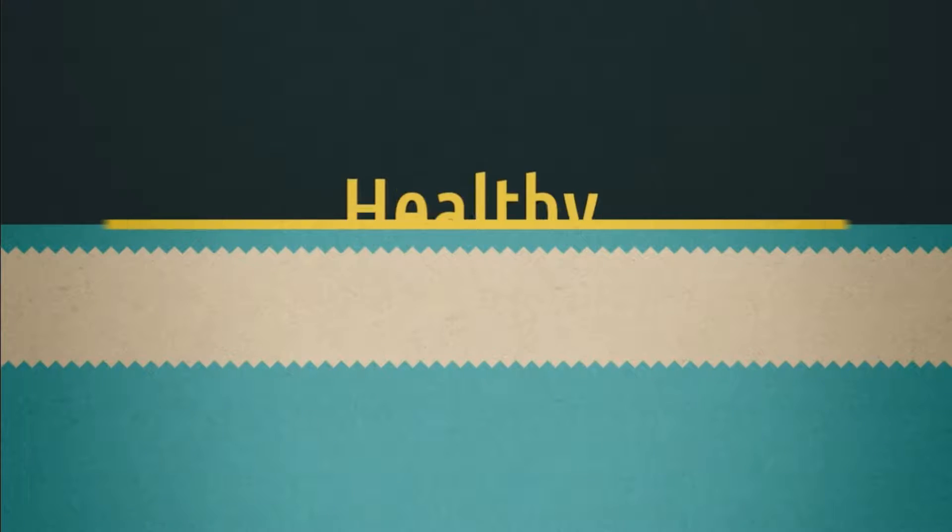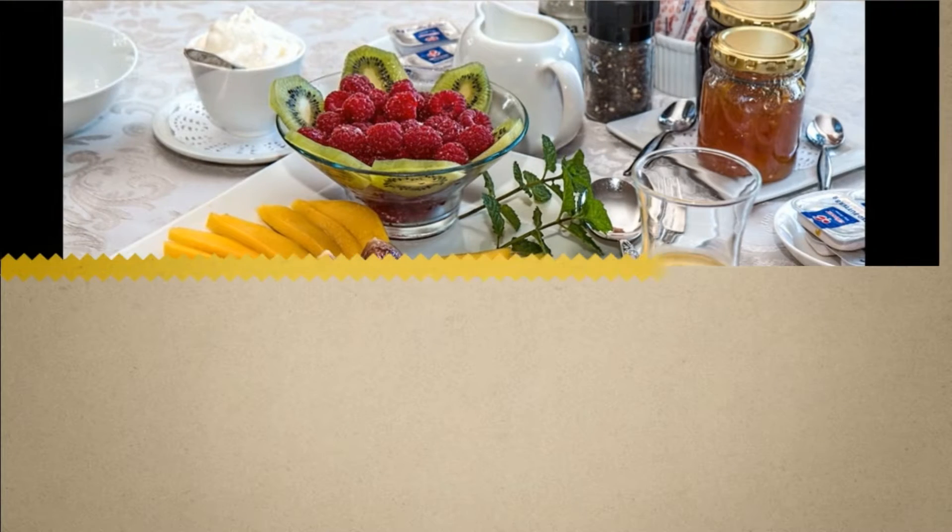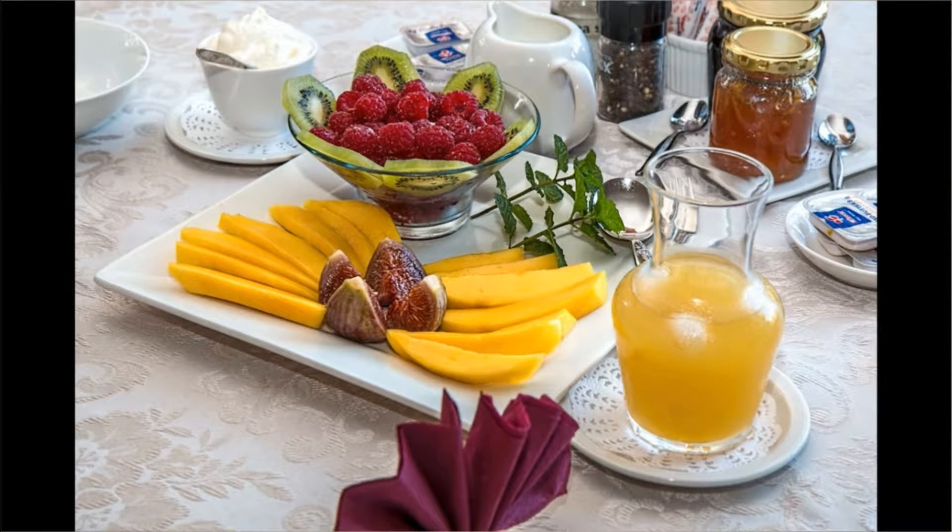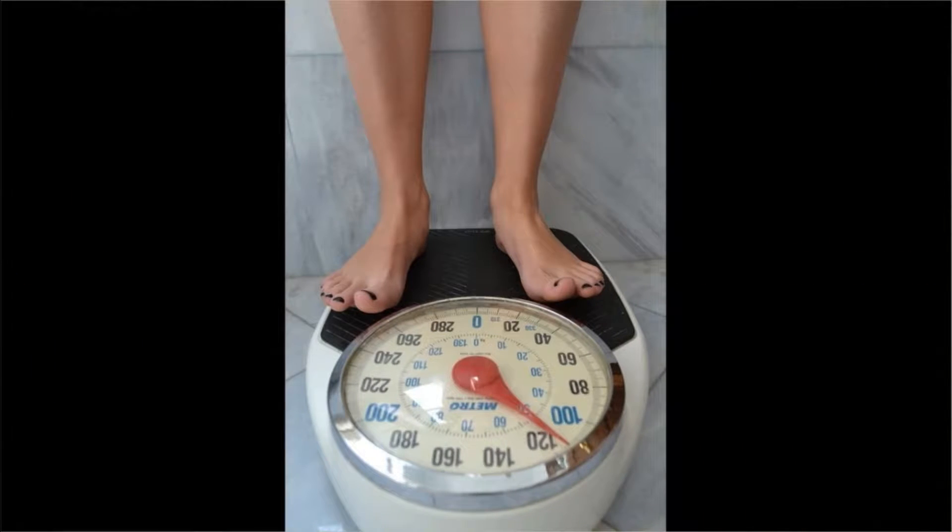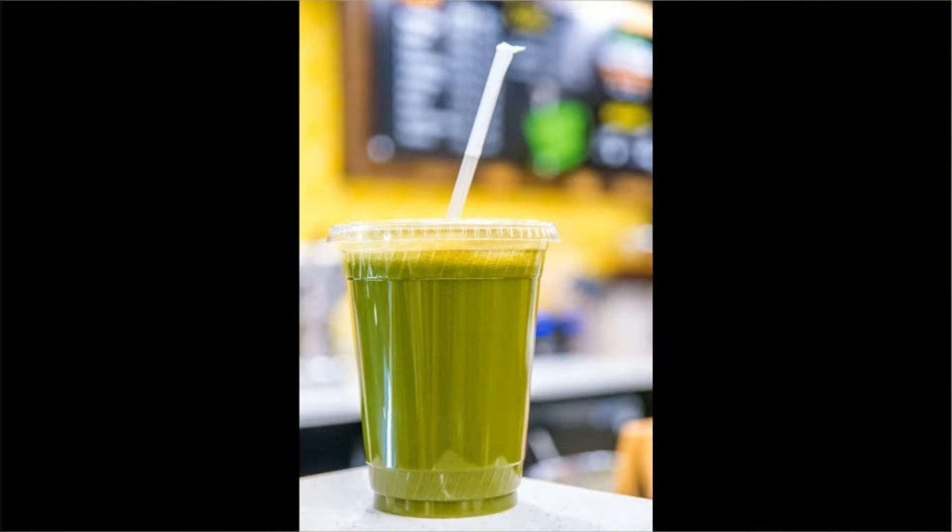Ketogenic diets have been in use since 1924 in pediatrics as a treatment for epilepsy. A ketogenic diet is one that is high in fat and low in carbs. The design of the ketogenic diet is to shift the body's metabolic fuel from burning carbohydrates to fats.